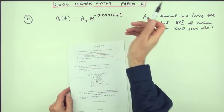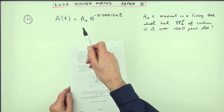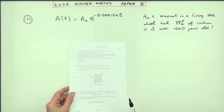Number 11 then from the 2006 Higher Maths Paper 2. An exponential decay equation. Notice the negative.